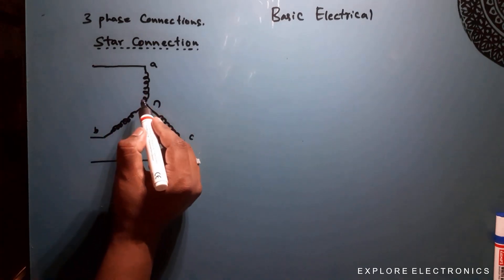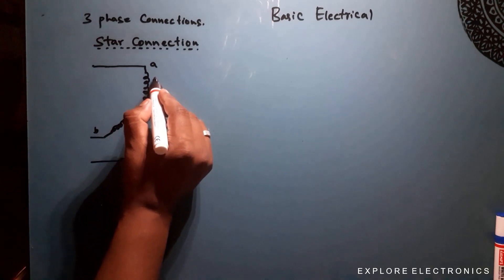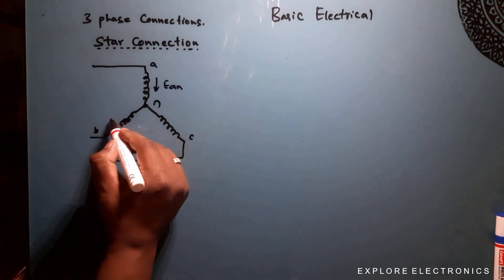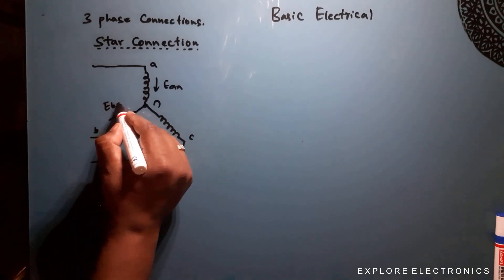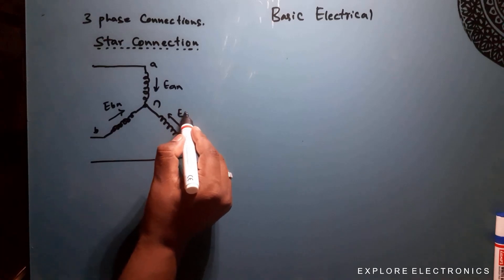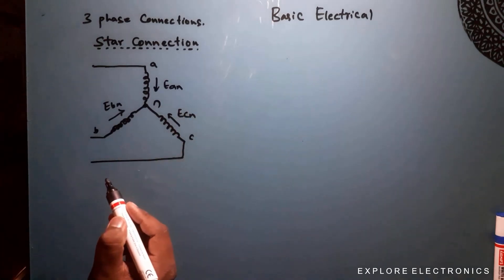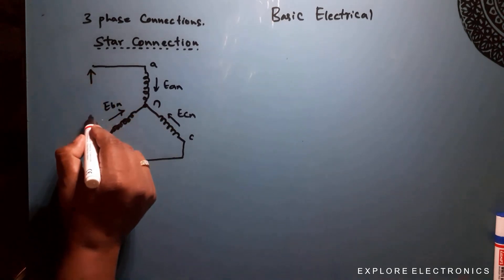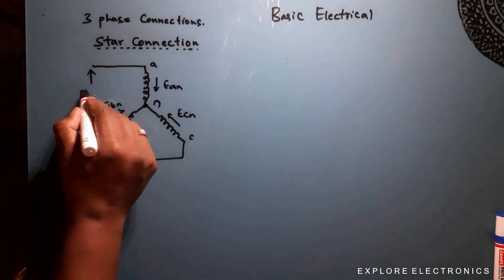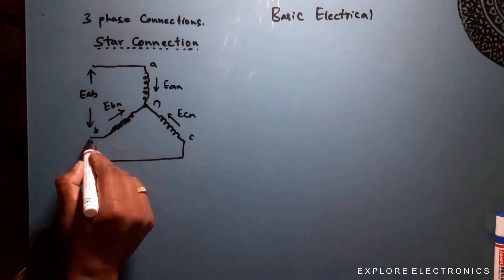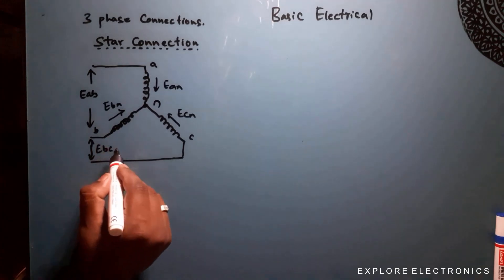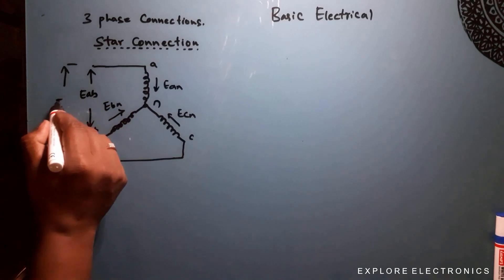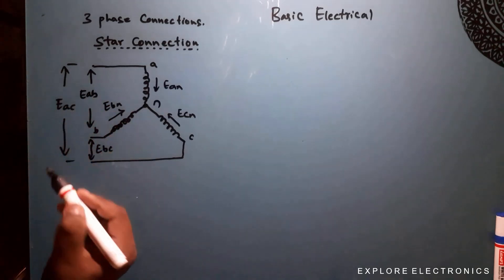Here you can see the phase voltages: EAN is the phase voltage between A and N, EBN is the phase voltage between B and N, and similarly ECN. These three are the phase voltages. The line voltages are EAB between A and B, EBC between B and C, and EAC between A and C.